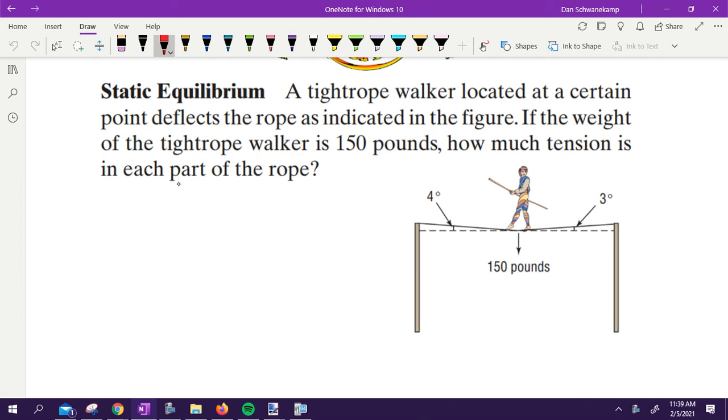So when they're here, this angle is down three degrees, that one's four degrees. The person weighs 150 pounds. How much tension is in each part of the rope? First thing we're looking at is what forces are acting on the rope. How many forces? Three.